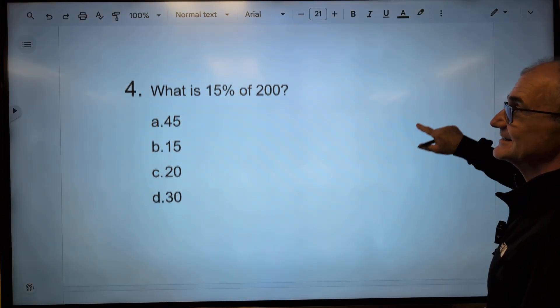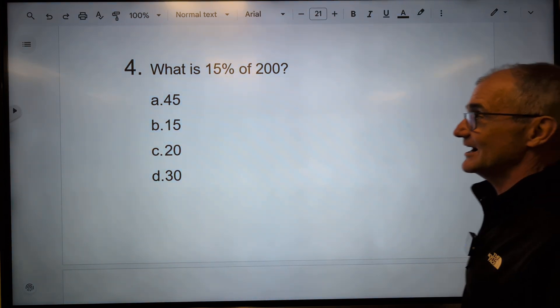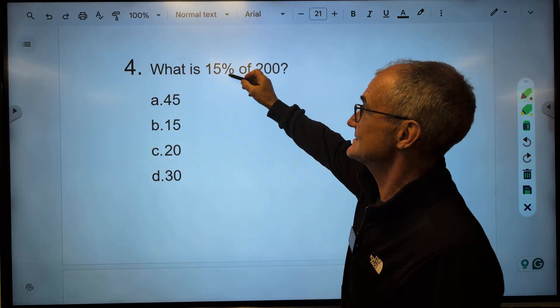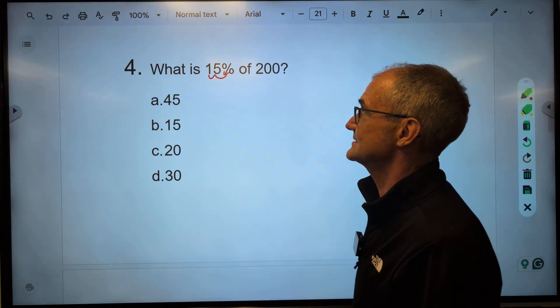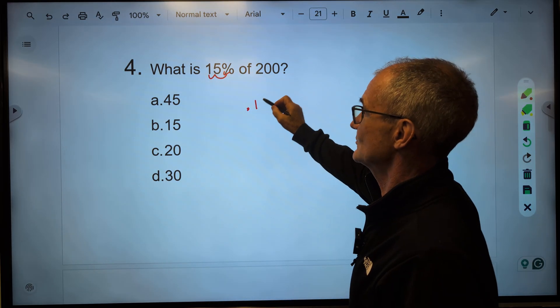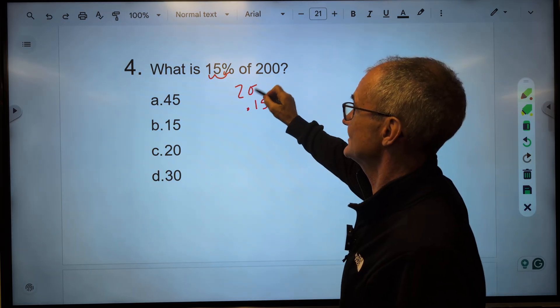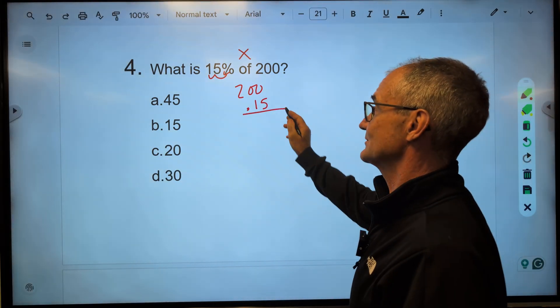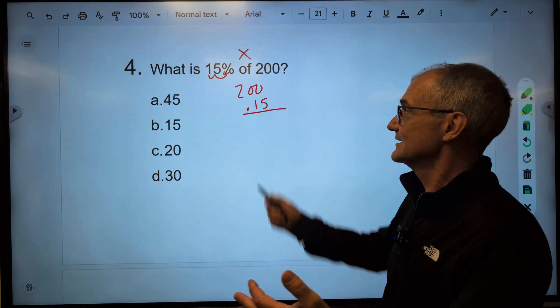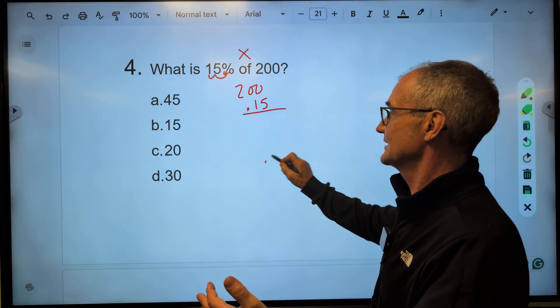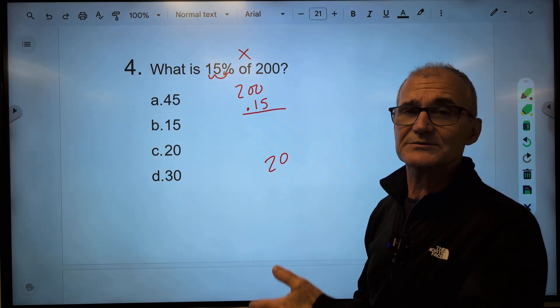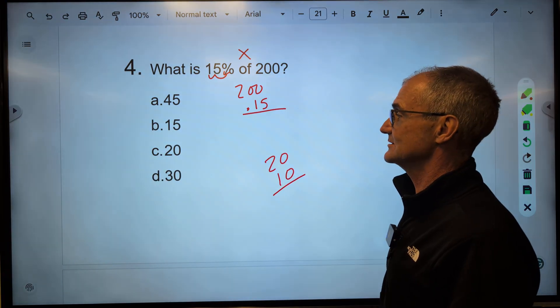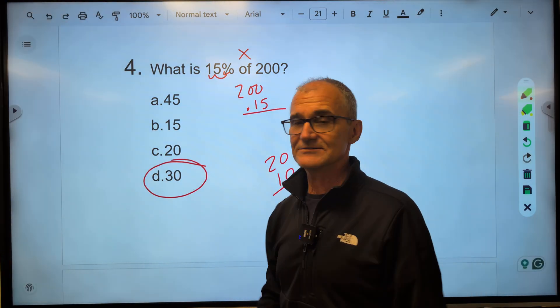Okay, moving on to number 4. Pause the video, give it a try, unpause the video, watch how I do it. 15%, I think of this as an arrow, shooting the decimal over one, two places. What is 15% or 0.15 of 200? Of means to multiply, so 200 times 0.15. Again, I can multiply all that out, or I could just use this trick. 10% of 200 is 20. 5% of 200, well, 5% is half of 10%, so it has to be half of that. So 15% is a total of 30. Correct answer, answer D.